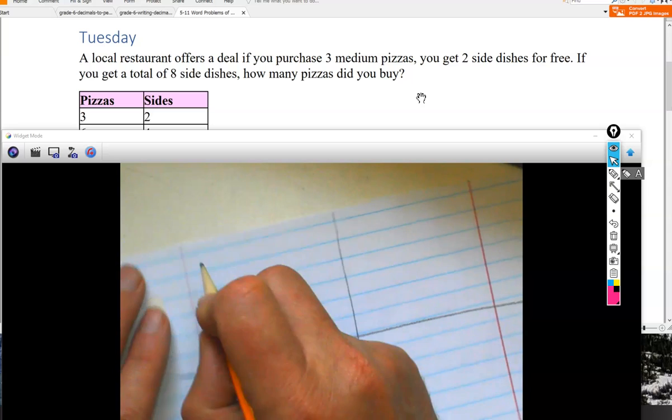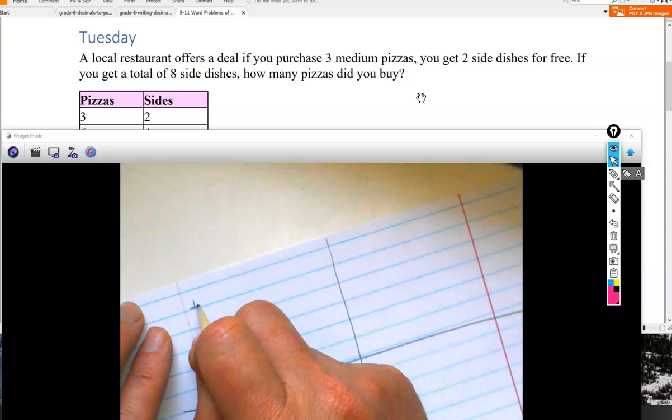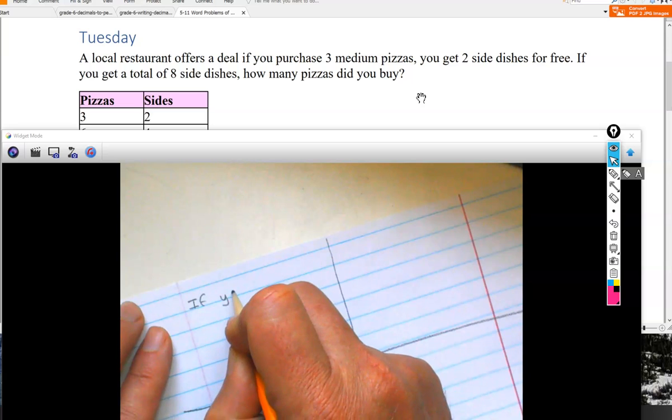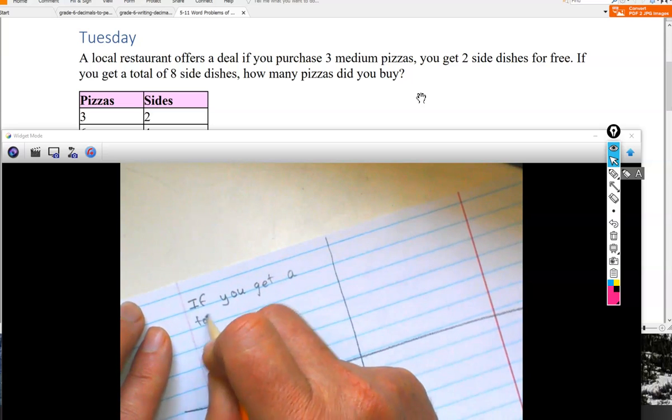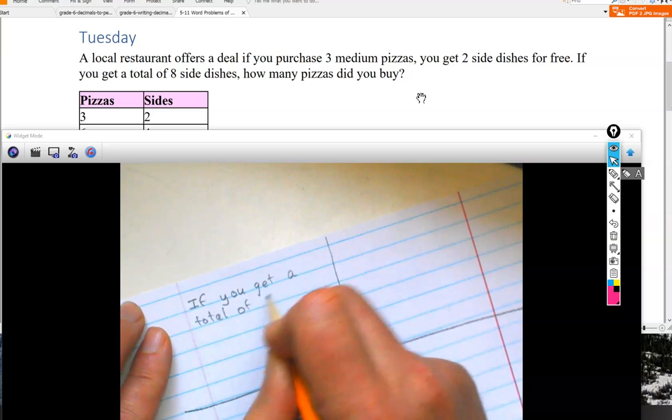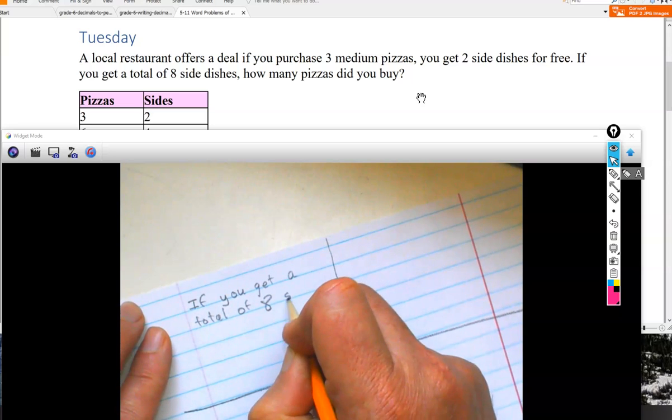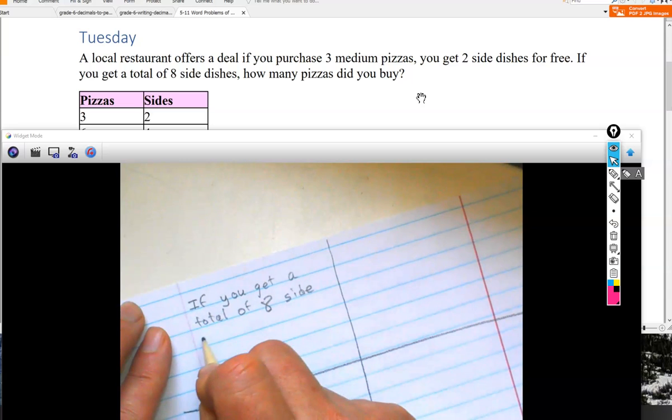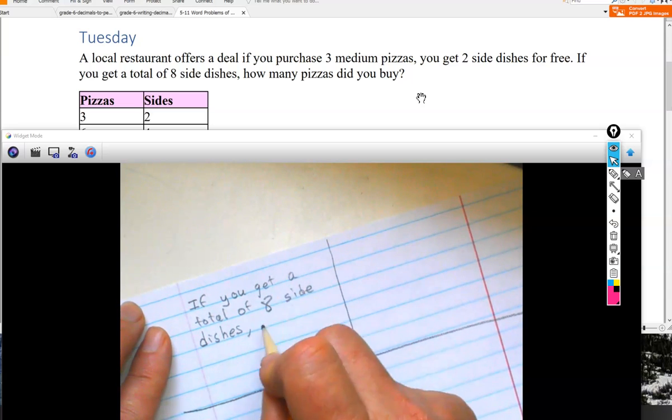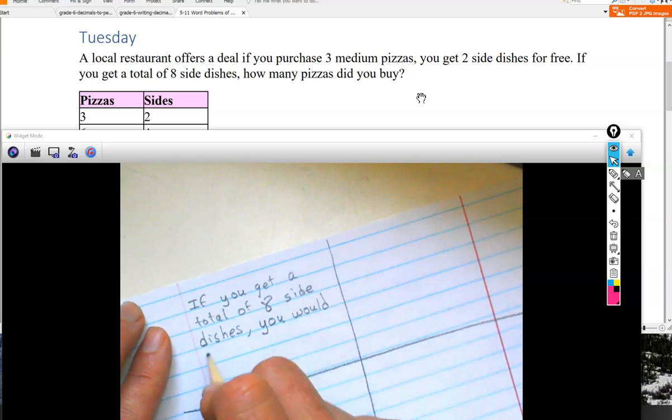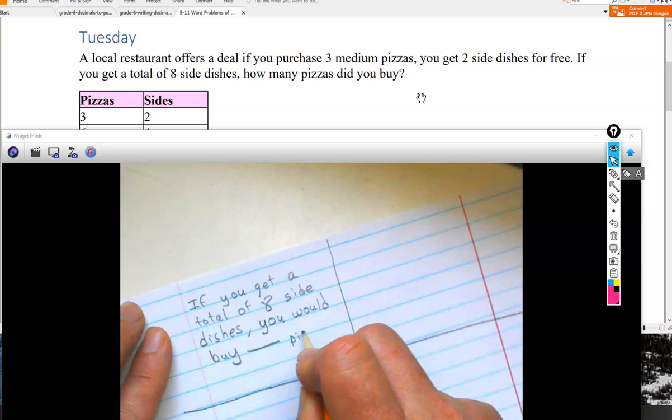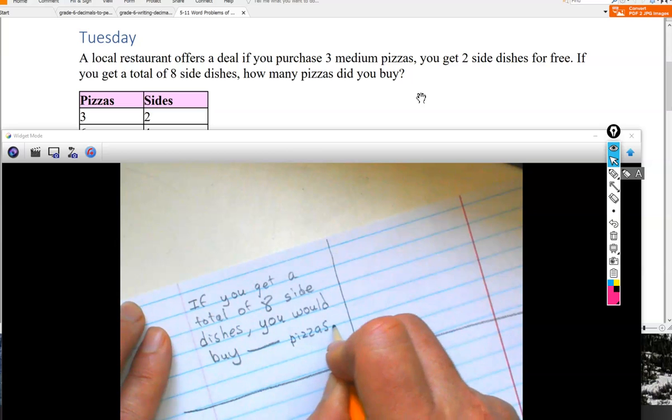You could say, you could make it even longer. If you get a total of eight side dishes, you would buy, and that makes it sound a little bit better, you would buy blank pizzas. There's my answer sentence.